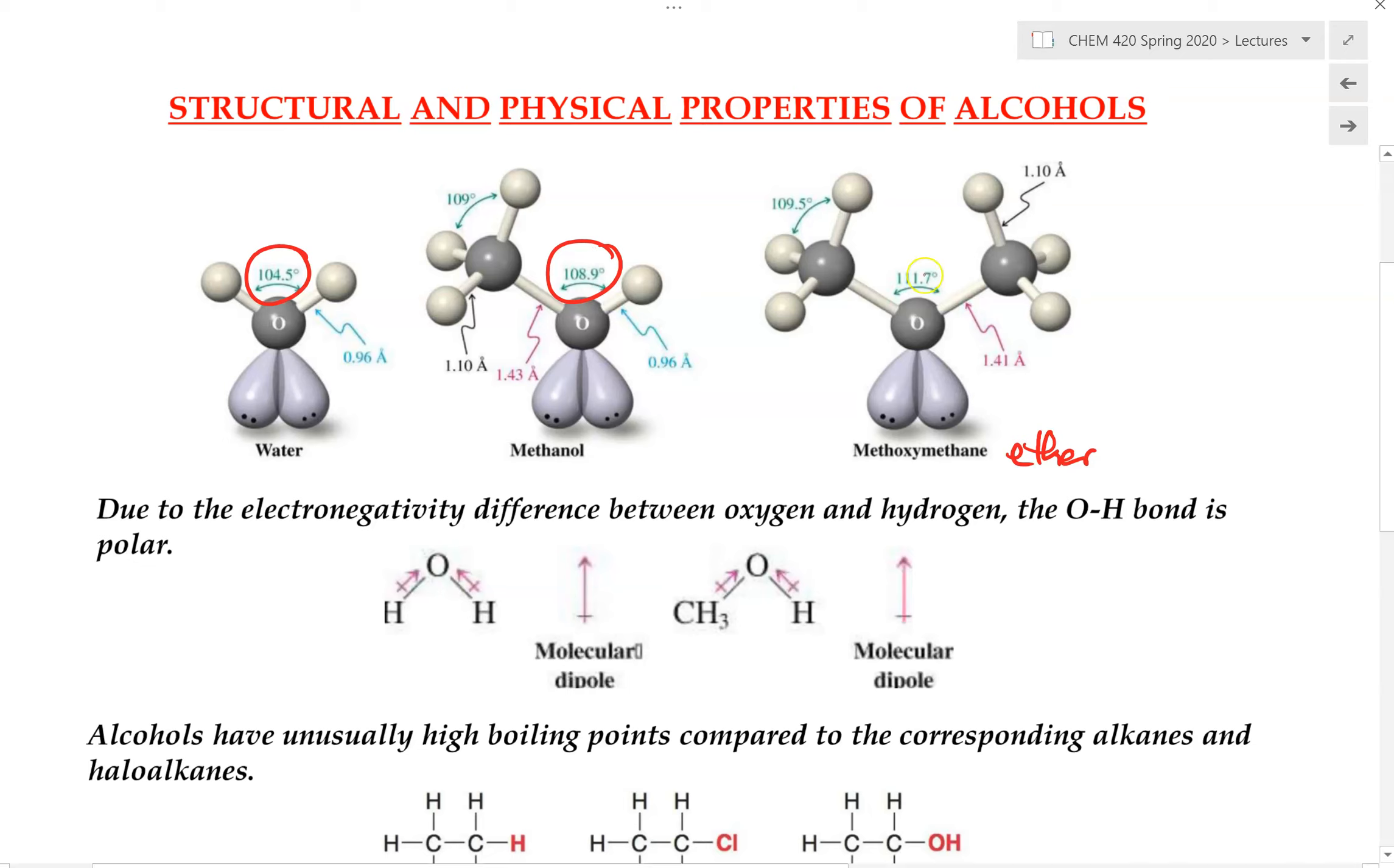In the case of the ether, this bond angle right here is 111.7 degrees. So they deviate from the ideal tetrahedral angle of 109.5 degrees a little bit.